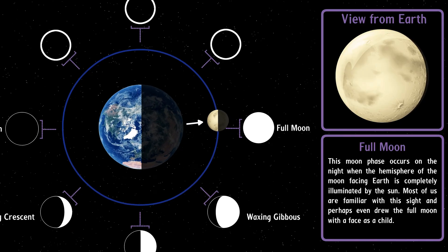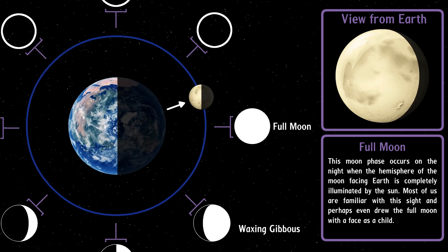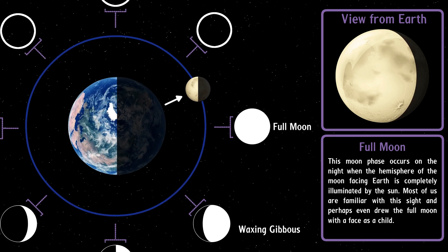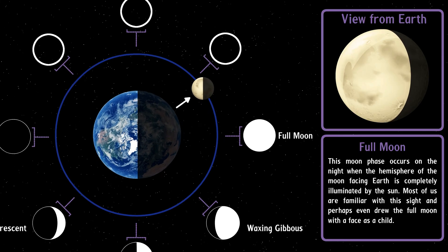Full moon. This moon phase occurs on the night when the hemisphere of the moon facing Earth is completely illuminated by the sun. Most of us are familiar with this sight and perhaps even drew the full moon with a face as a child.